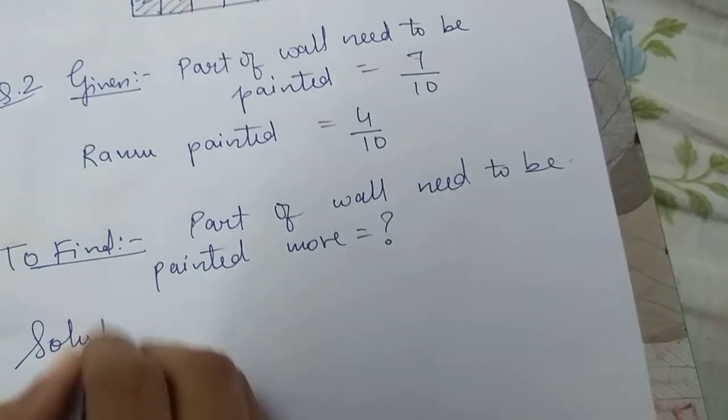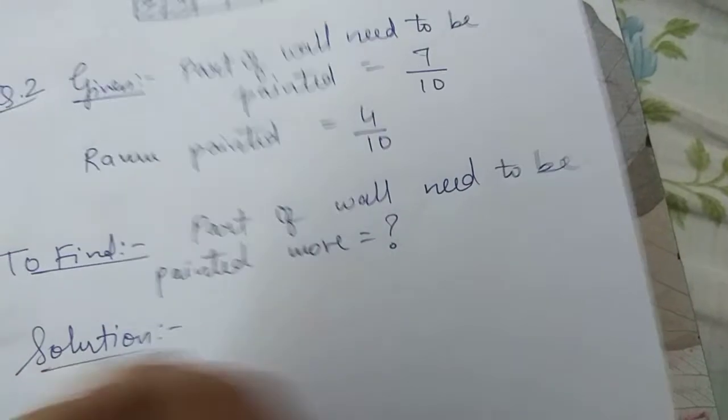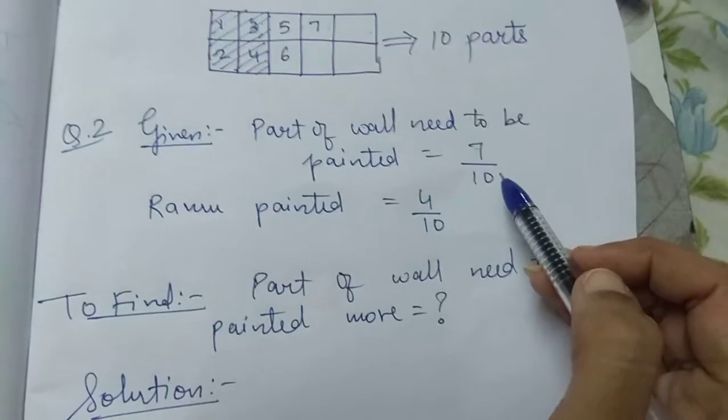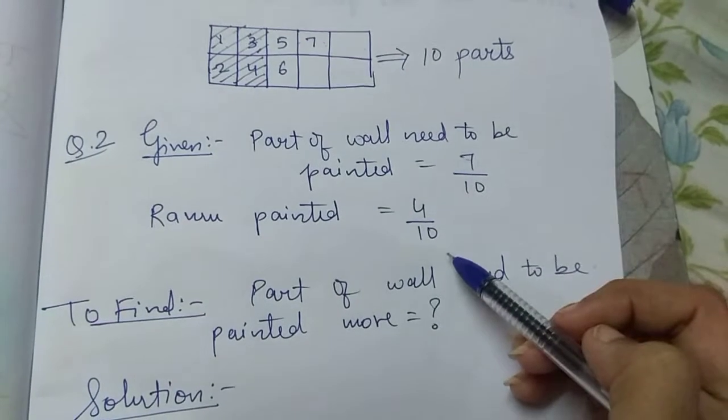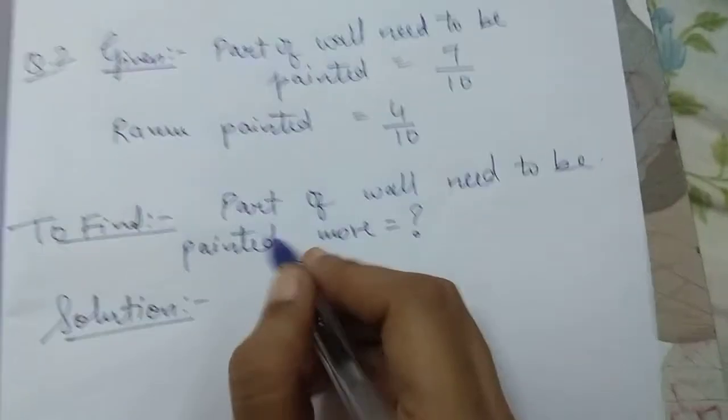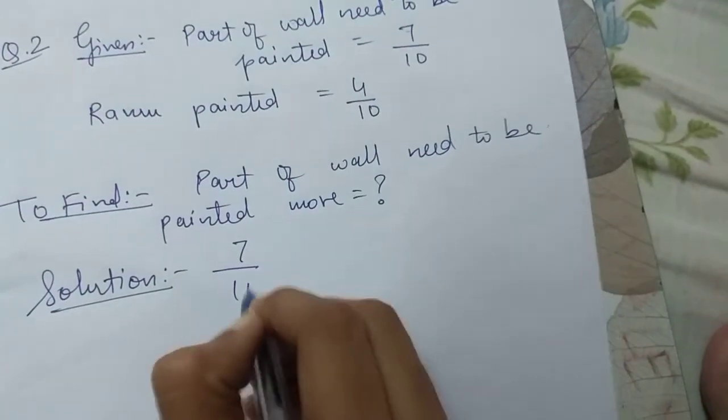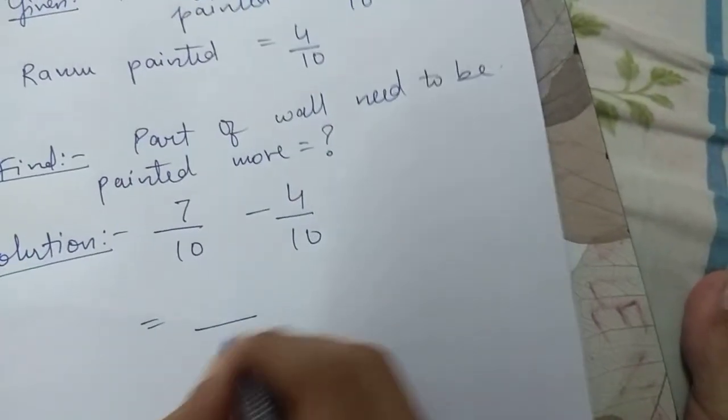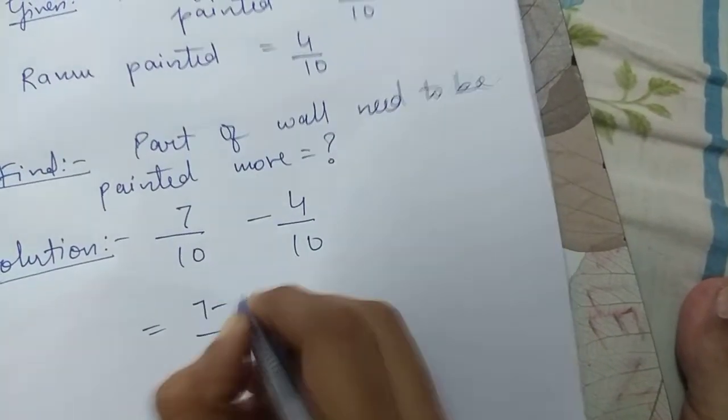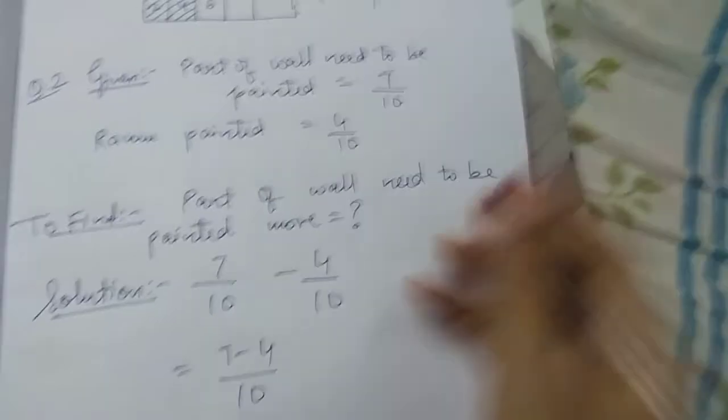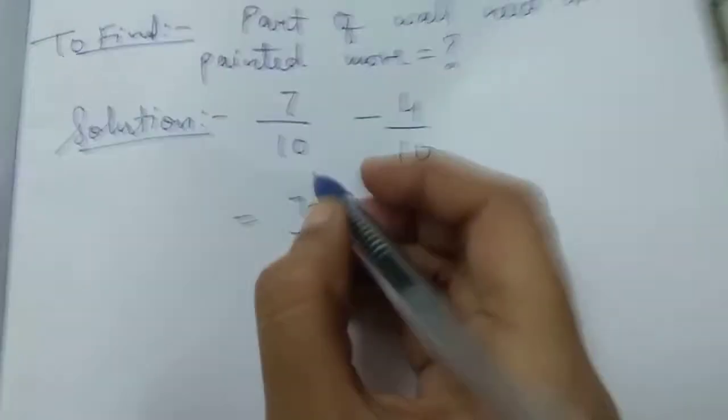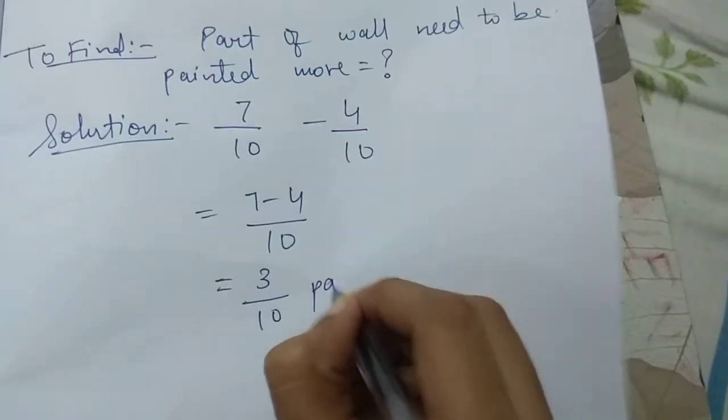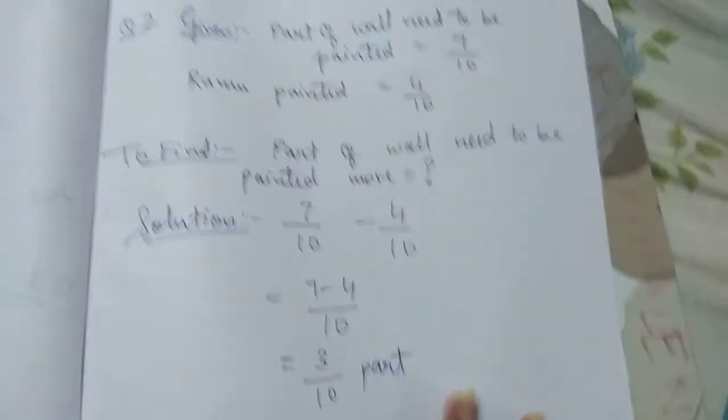So what we will do, we will just subtract out of the total part which is to be painted, how much Ramu painted. So 7 by 10 minus 4 by 10. Again, you all can see denominators are same. So numerators will be subtracted. So 7 minus 4 will give us 3 by 10 parts.